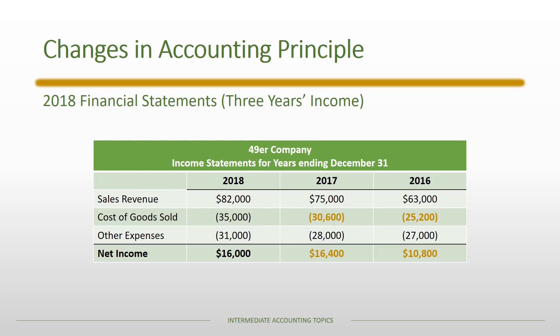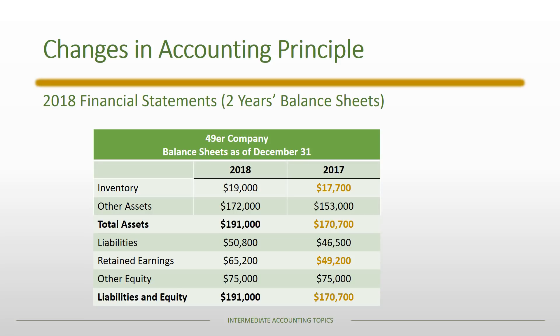We then recast the financial statements. In 2018, three years of income statements must be reported — 2016, 2017, and 2018. For 2016 and 2017, cost of goods sold has been adjusted to use FIFO, so net income in each year is higher. We also recast the balance sheet, reporting two years. The 2018 balance sheet is already prepared under FIFO. For 2017, the inventory account balance is recast, affecting total assets, and retained earnings is recast, affecting total liabilities and equity — both reflecting the $9,200 cumulative difference between LIFO and FIFO.